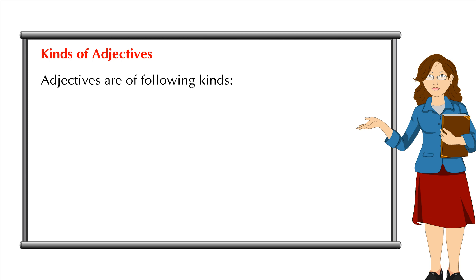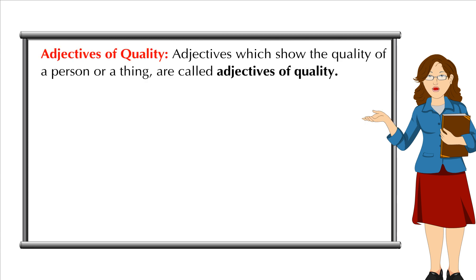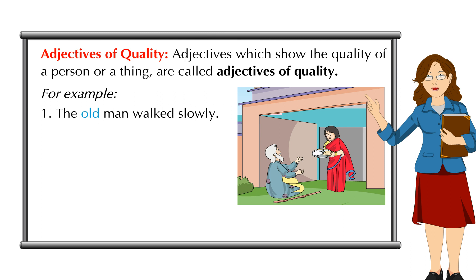Kinds of Adjectives. Adjectives are of following kinds. Adjectives of Quality: Adjectives which show the quality of a person or a thing are called Adjectives of Quality. For example, the old man walked slowly.